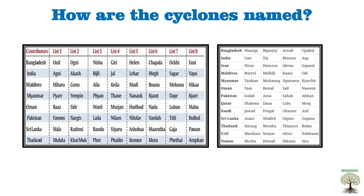In 2000, a group of nations under the World Meteorological Organization (WMO) and ESCAP — the UN Economic and Social Commission for Asia and the Pacific — decided to start naming cyclones. Initially, eight countries participated: Bangladesh, India, Maldives, Myanmar, Oman, Pakistan, Thailand, and Sri Lanka. In 2018, five more countries joined: Iran, Qatar, Saudi Arabia, UAE, and Yemen, making a total of 13 countries.